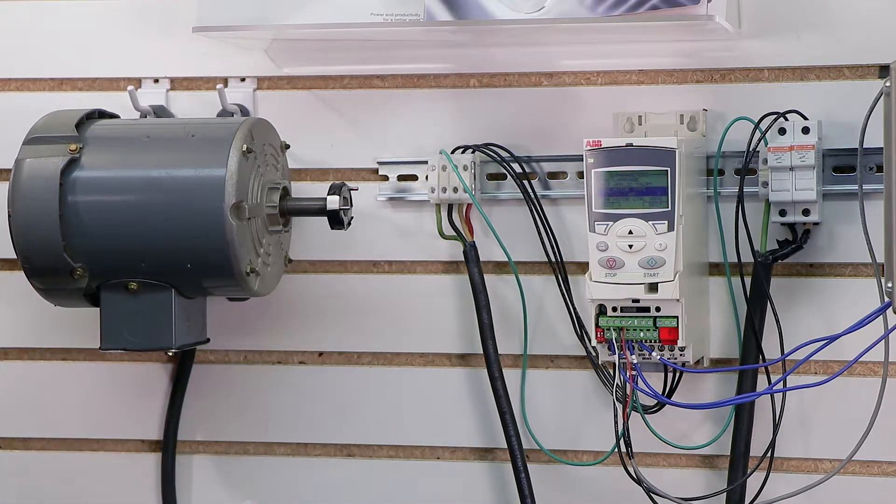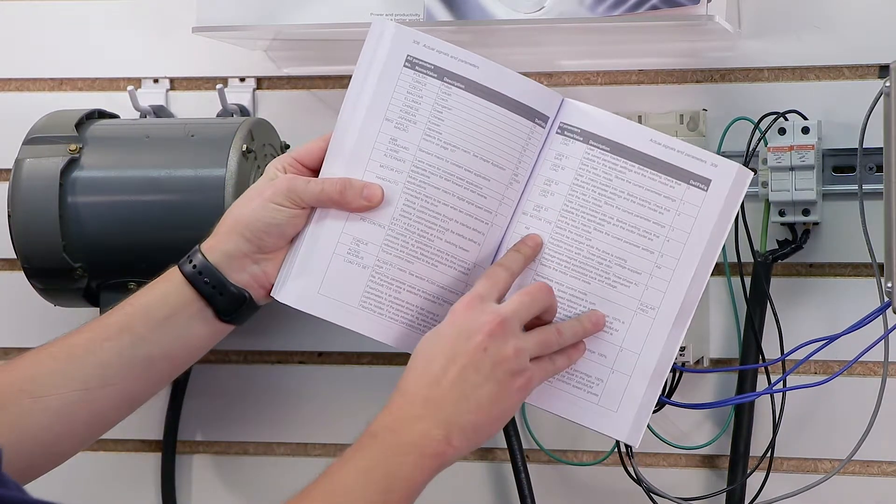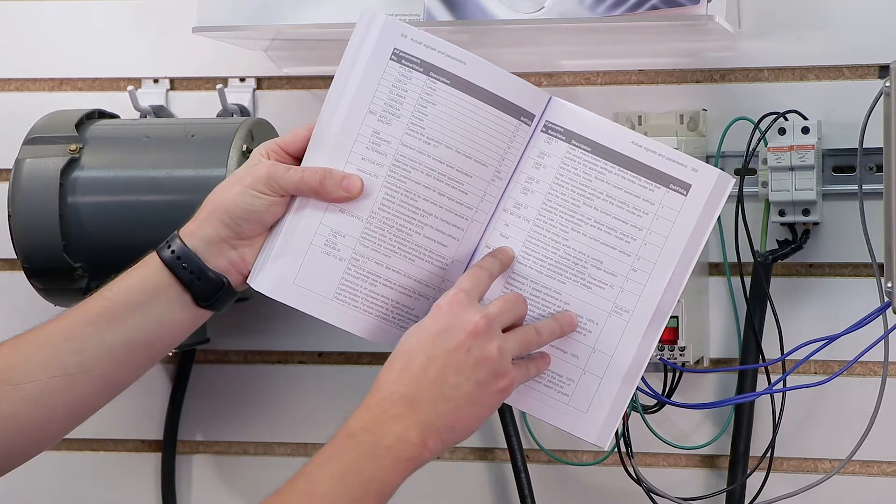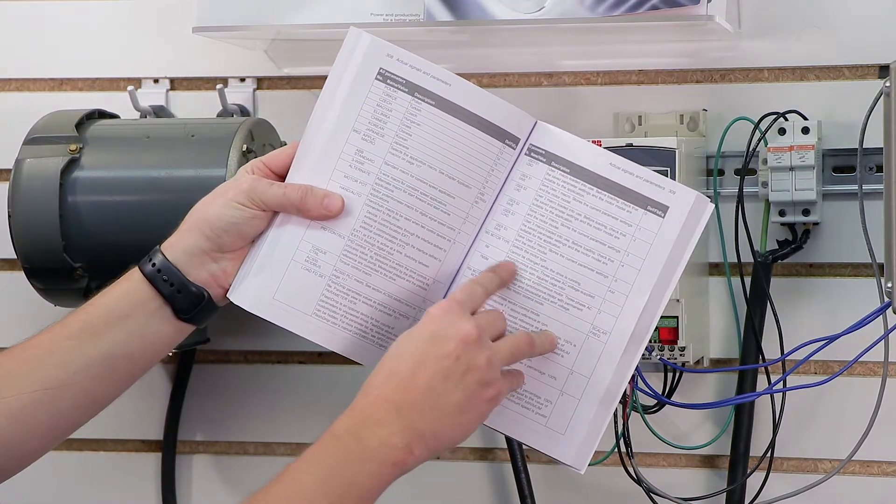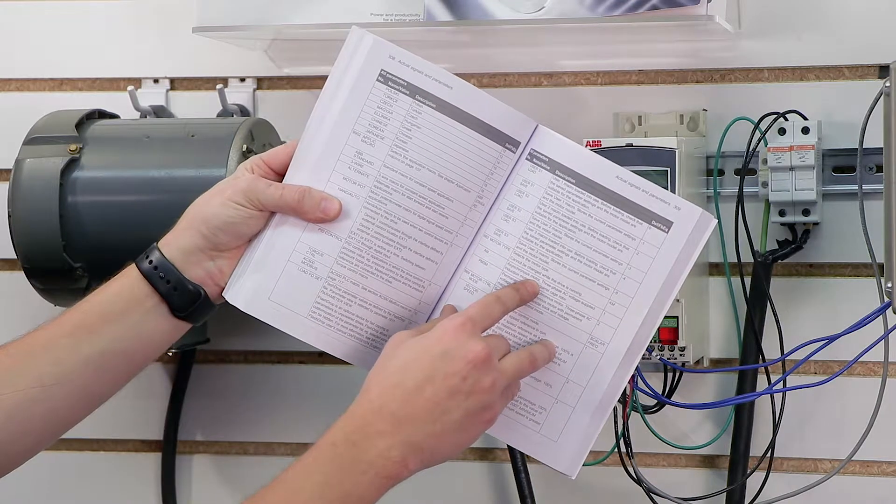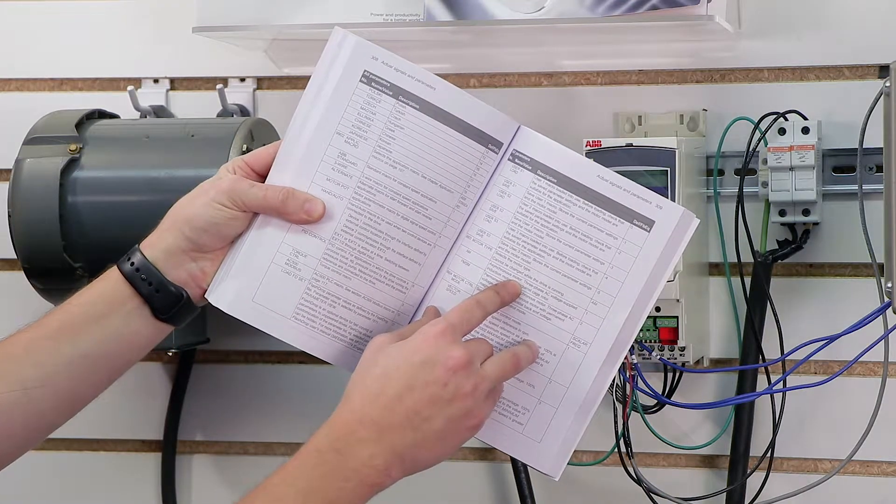This is our motor type. If we look in our manual, we will see that in 9903 there's two different types of motors we can pick. AM is asynchronous motor - a good majority of you will be using an asynchronous motor. This is a standard non-permanent magnet motor.